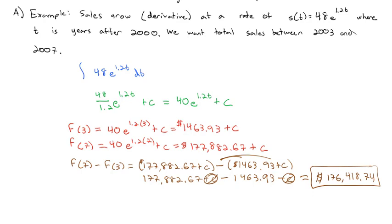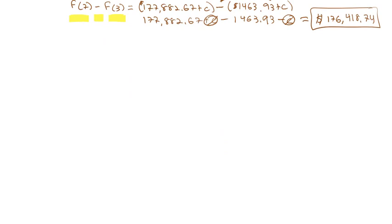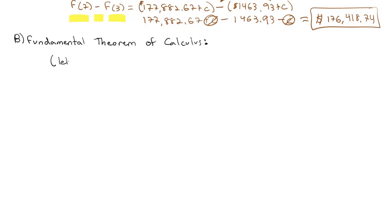This hints at the process of what we're trying to do: finding the total between two points. To do that, we subtracted the upper limit of 7 and the lower limit of 3. That's the idea behind what we call the Fundamental Theorem of Calculus.